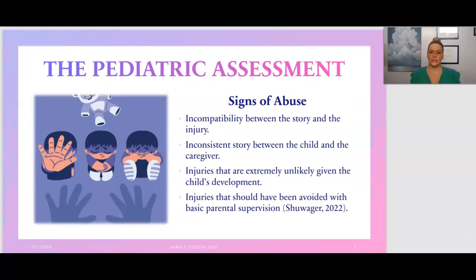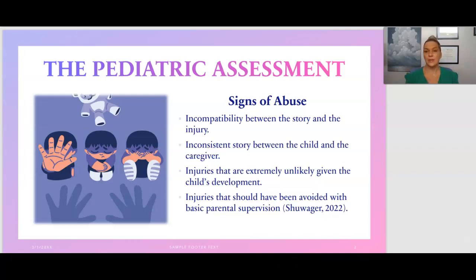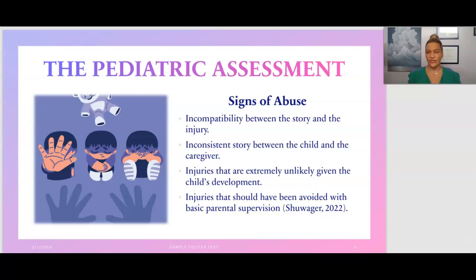Moving on to signs of abuse — we'll cover this more in depth in another lesson, but for now, signs of abuse may include incompatibility of the story and the injury. For example, if a parent says a child was jumping on the bed and fell off and broke their arm, but the child is not developmentally old enough to jump up and down or stand by themselves, that story would be incompatible.